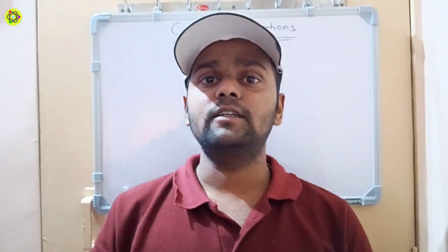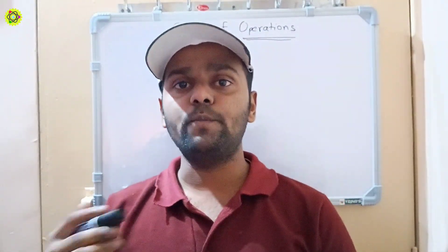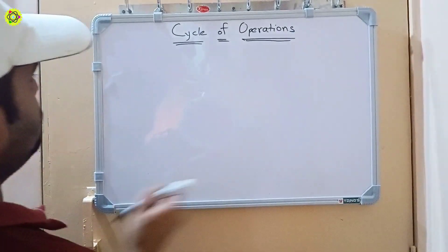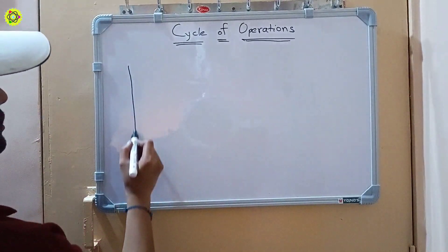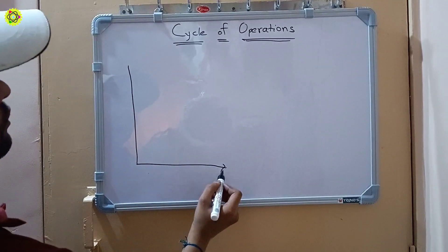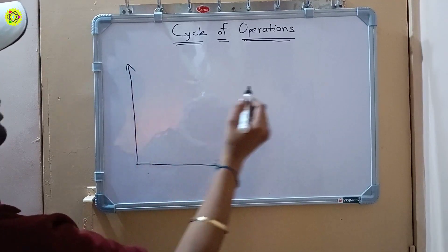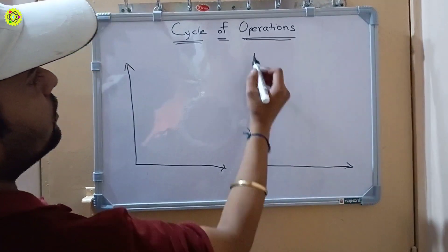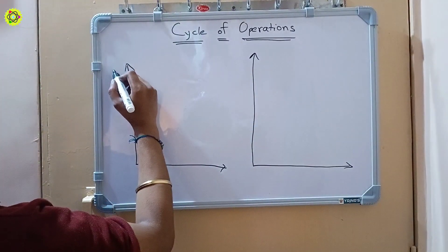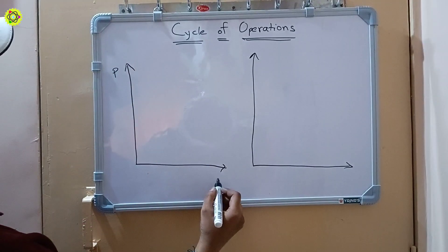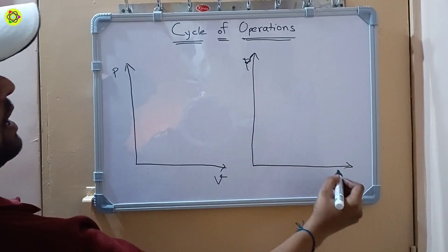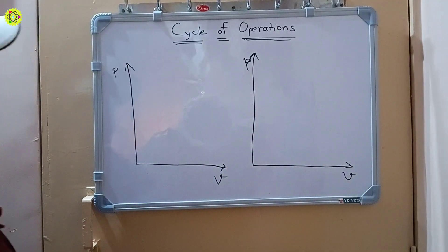Hi students, welcome. In this video we will understand the concept of cycle of operations. We are taking a graph here with two examples. This is our pressure axis and this is our volume axis.